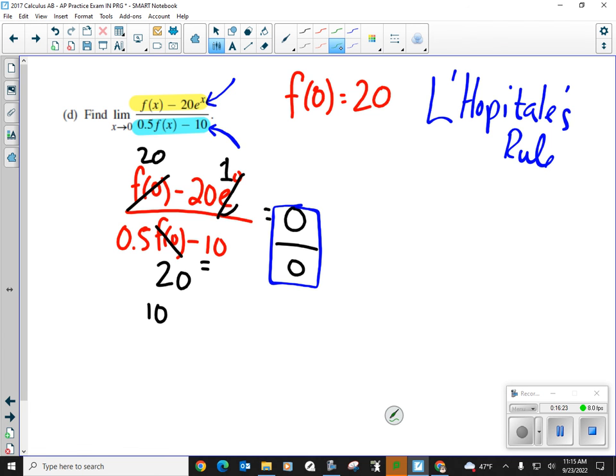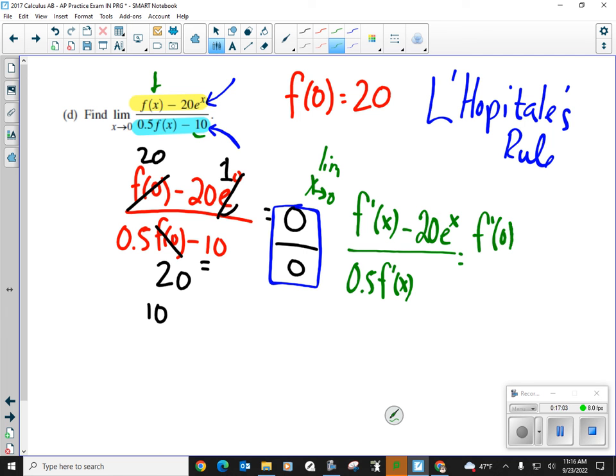So let's go ahead and do this. The derivative of the top, the derivative of f of x is just f prime of x minus, okay, the derivative of e to the x is just e to the x. So it will stay 20 e to the x, all right? All over half of the derivative of f, which is just f prime of x, okay, minus, okay, the derivative of 10, which is 0. Okay, the derivative of 10 is 0. So here we go. I'm still taking the limit as x goes to 0. So let's plug 0 in now.